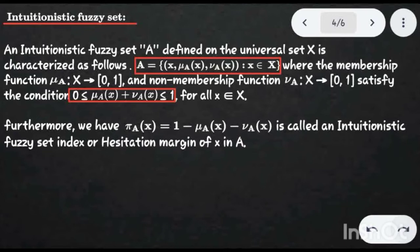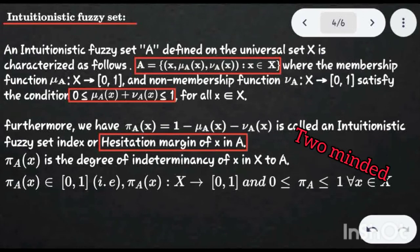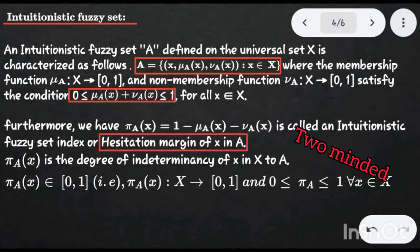There is one more function: π_A(x), called the hesitation margin of x. Hesitation means reluctance or being two-minded — when the appearance of an element in the universal set is simultaneously present, absent, or both, so we cannot judge the appearance clearly. This is called the hesitation margin, defined as π_A(x) = 1 − μ_A(x) − ν_A(x), and π_A: X → [0,1], with values in the range [0,1].